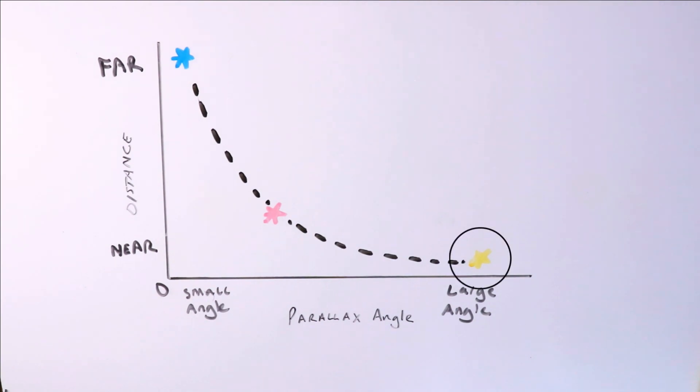If there's a large parallax angle, the star is nearer. If there is a small parallax angle, the star is farther away. If we don't measure any parallax angle, that means the star is too far away to determine its distance with this technique.